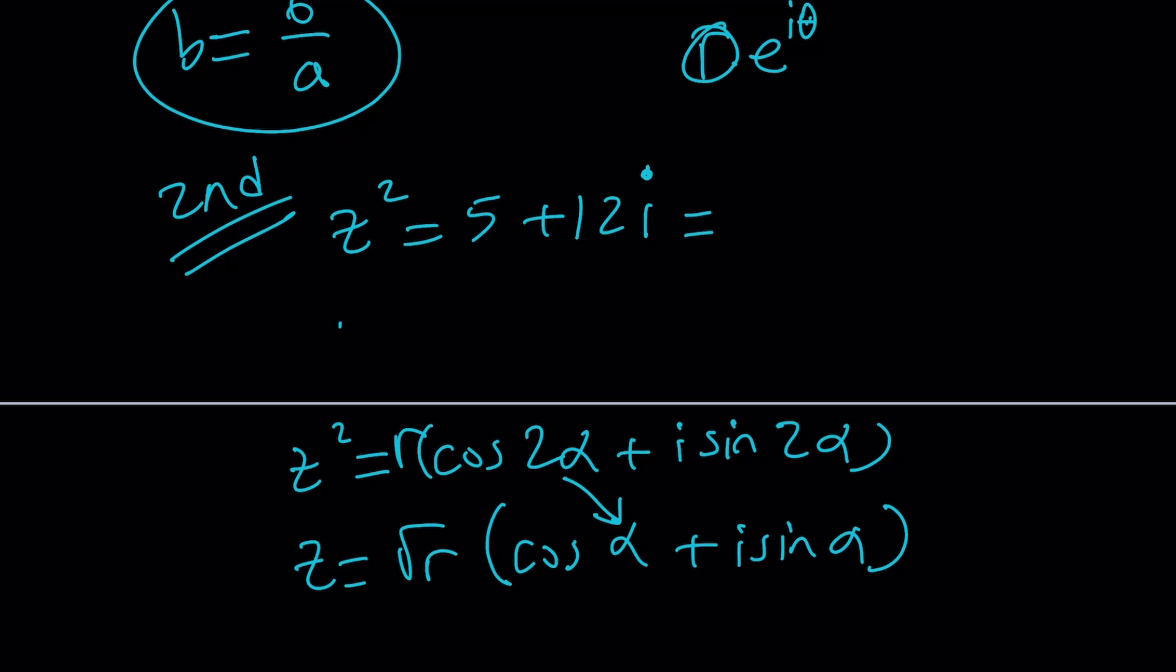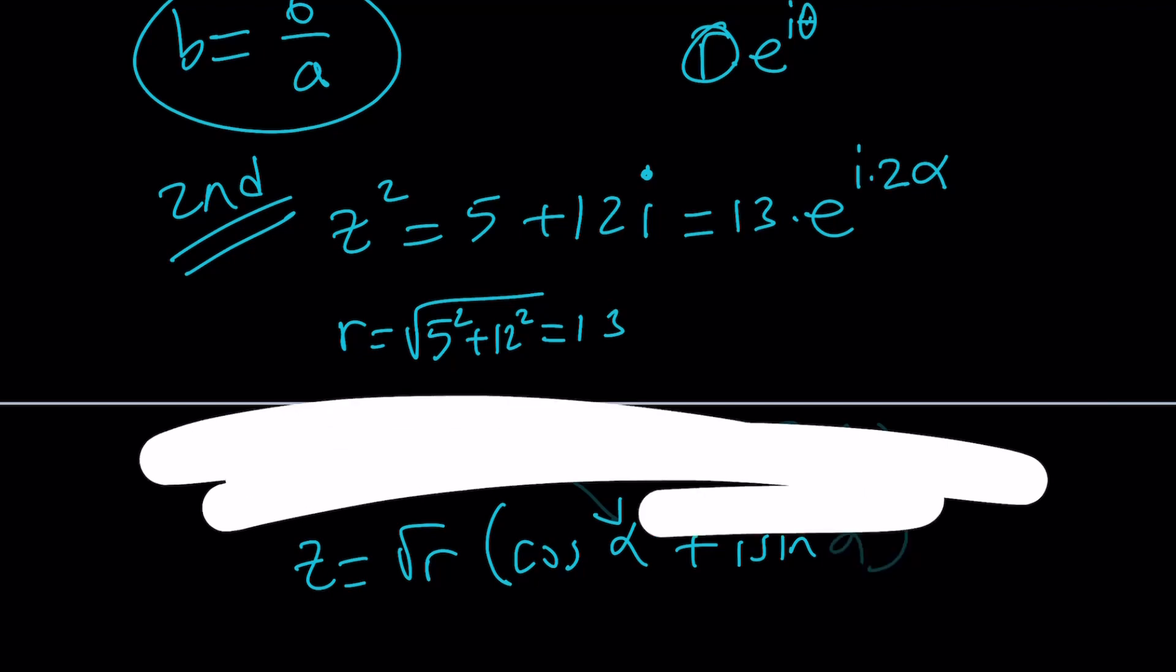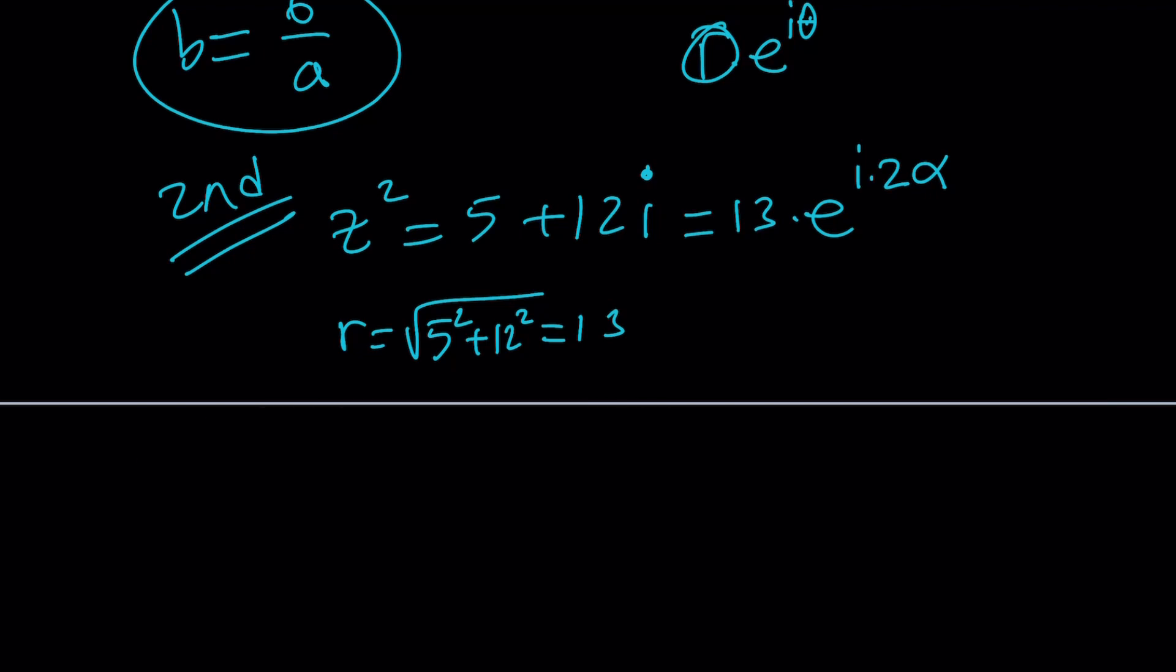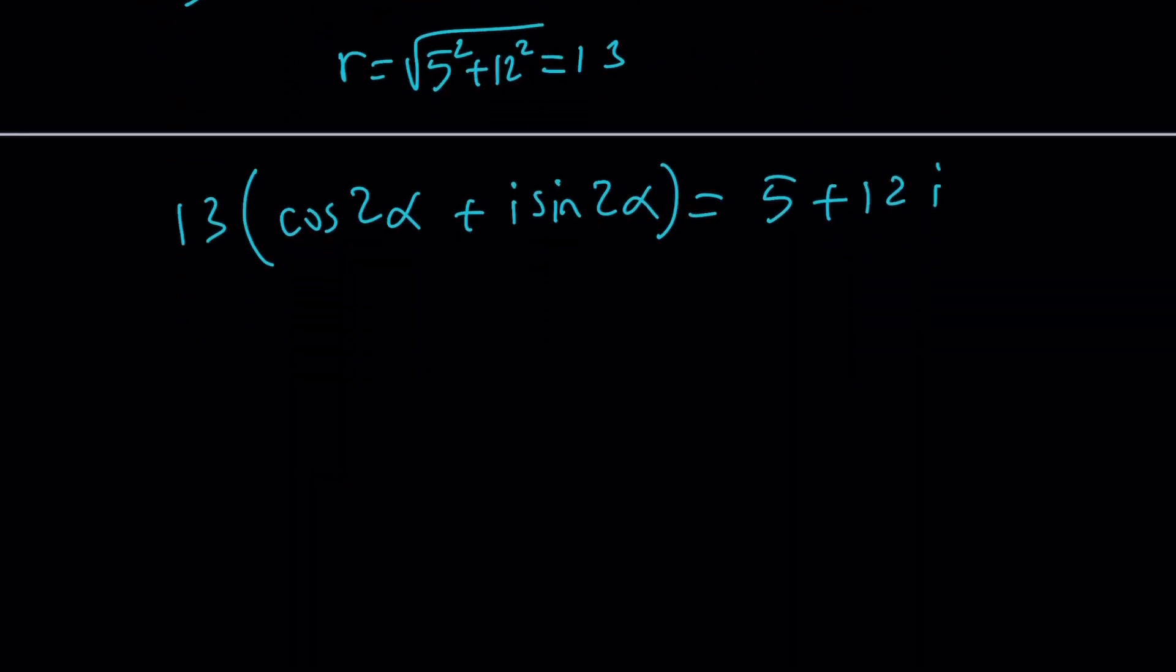So let's write this as r times e to the power i times 2 alpha. But what is r? r is the square root of a squared plus b squared. So it's from the 5, 12, 13 triangle. It's going to be 13 times e to the power i times 2 alpha. So suppose our angle is 2 alpha. Now that 2 alpha actually satisfies the following. Since we can write this number as 13 times cosine of 2 alpha plus i sine 2 alpha, and that's equal to 5 plus 12i.